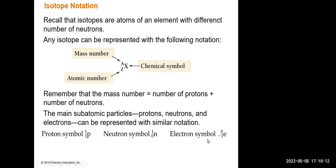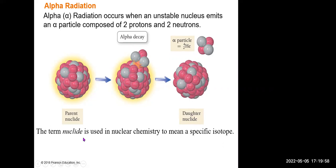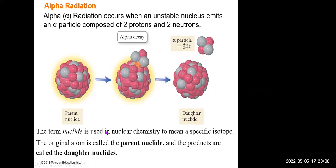Alpha radiation involves an alpha particle ejected from an unstable nucleus. The alpha particle is the nucleus of a helium atom, consisting of two neutrons and two protons. Once the alpha particle is emitted, whatever is left over is called the daughter nuclei. The term nuclei in this chapter refers to a specific isotope. The original atom is called the parent nuclei and the product is called the daughter nuclei.